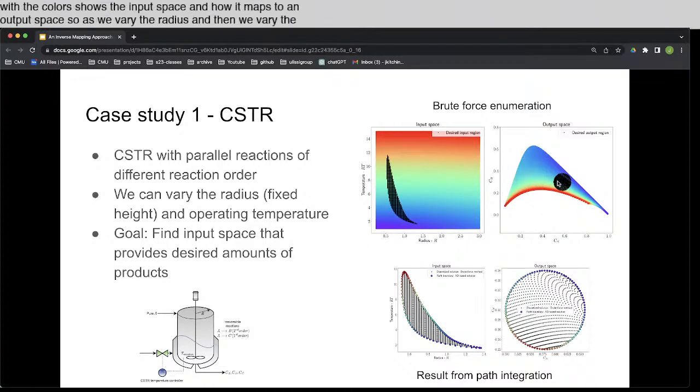And if we want to be in this circle on the right, the black circle represents a desired output space. Then we have on the left the nonlinear transformed region of input space that corresponds to it. Now this was on the top calculated by brute force, where we just calculate every point on the left and the right, and then figure out which ones fall in this region.